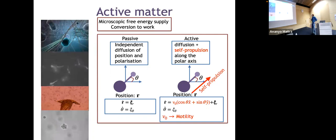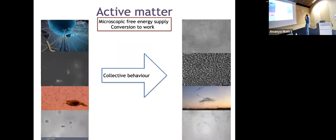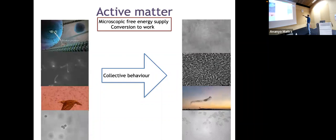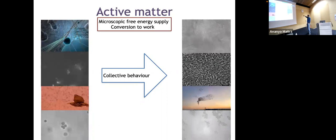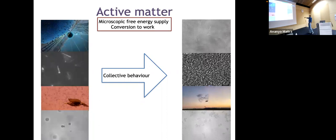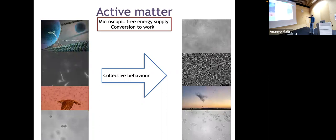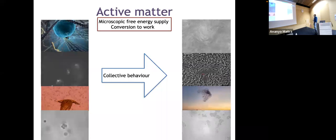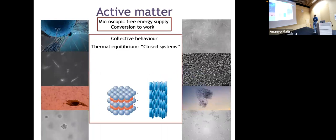The most interesting question in active matter is about the collective behaviors of a collection of such active particles. This includes collective motion of molecular motors and microtubules, bacteria running in a fluid, a murmuration of starlings, and Janus particles forming and breaking up in ways very different from any equilibrium system. The collective behaviors of active particles are very different from the usual collective behaviors we know in thermal equilibrium.